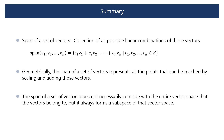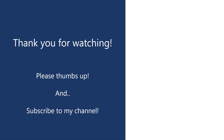Let's summarize the key points of this section. The span of a set of vectors is the collection of all possible linear combinations of those vectors, representing all vectors that can be formed by scaling and adding the given vectors. Geometrically, the span represents all points reachable by scaling and adding those vectors. The span does not necessarily coincide with the entire vector space, but always forms a subspace of that vector space. Thank you for watching — please thumbs up and subscribe to my channel.